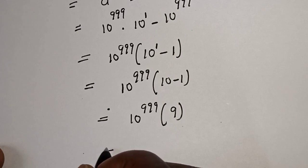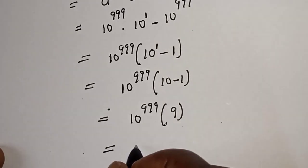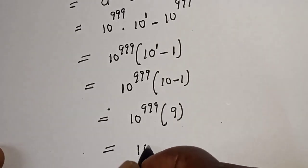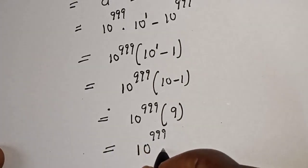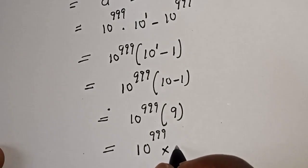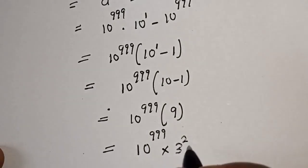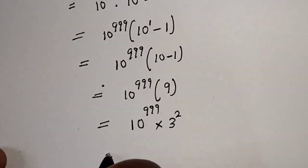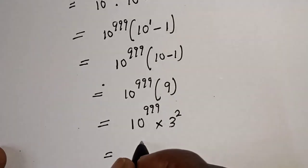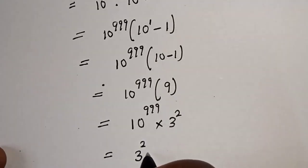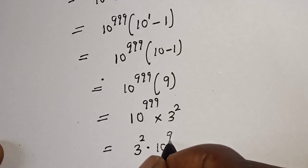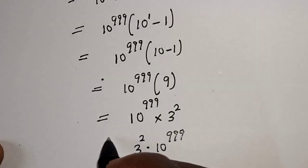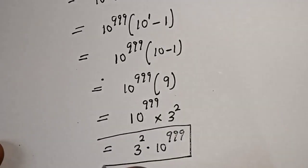This is equal to 10 raised to power 999 multiplied by 9. 9 can be written as 3 squared. Therefore, we have 3 squared multiplied by 10 raised to power 999, and that is our final answer.